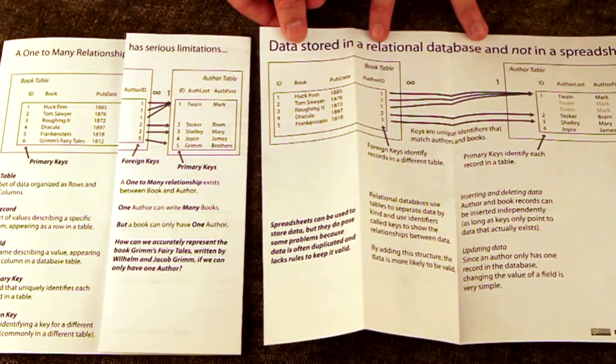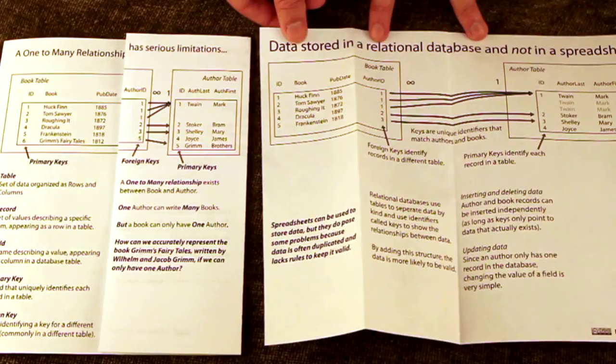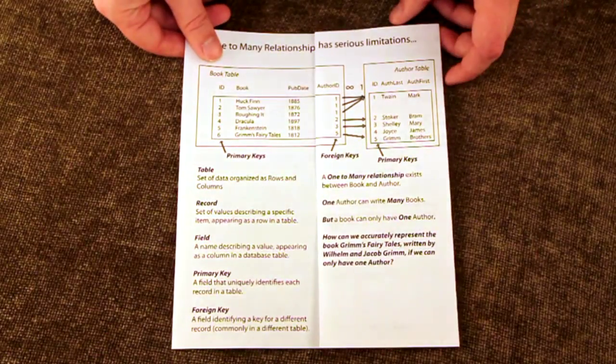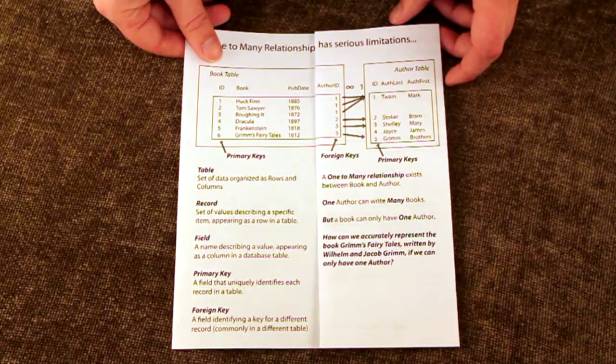When closed, the second pamphlet shows a one-to-many relationship, specifically the books and authors outcome of the unfolded first pamphlet, and asks the reader to think about what would happen if a book with multiple authors, such as Grimm's Fairy Tales, was added to this database.